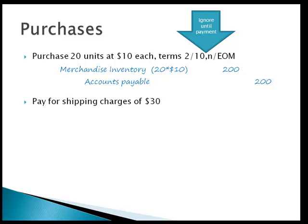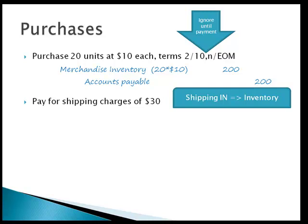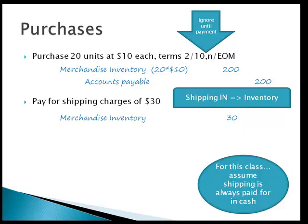If we have to pay shipping charges — say $30 — remember that shipping in goes to the inventory account. So there's our debit: we increase the cost of our inventory. When doing journal entries, try not to think about units; we're just tracking how much the overall inventory costs — $230 so far. For this class, assume shipping is always paid to a third-party freight company in cash. So cash is going down — credit cash for $30.